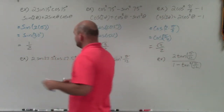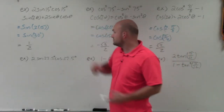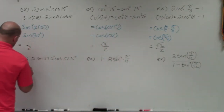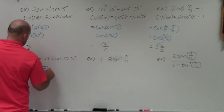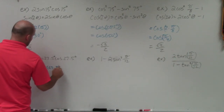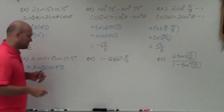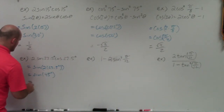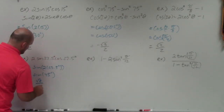The next one is another example using the sine double angle formula. So rather than rewriting everything, it's going to equal the sine of 2 times 22.5 degrees. Two times 22.5 is 45 degrees, so that's the sine of 45 degrees, which equals square root of 2 over 2.